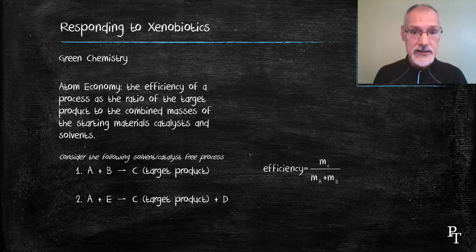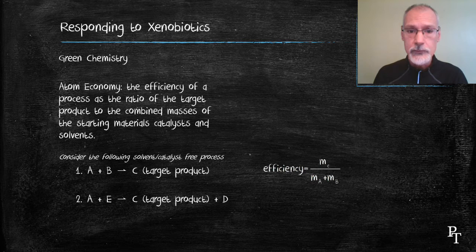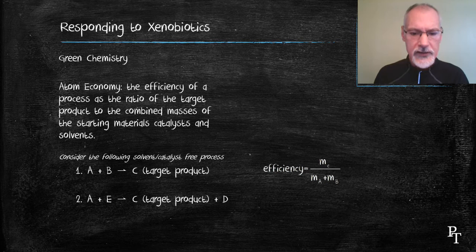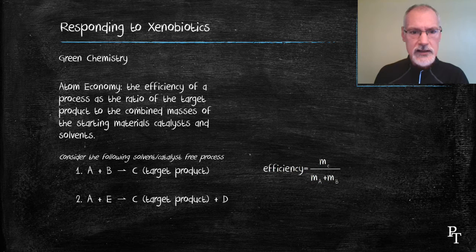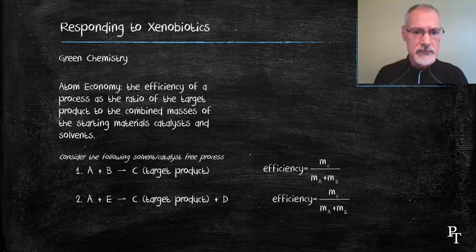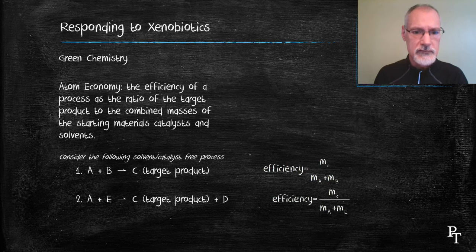Now if I use the exact stoichiometric amounts of my reactants, this process would almost be 100% efficient. In my second process, I'm reacting A with substance E to make substance C my target and a byproduct D. That byproduct D reduces the efficiency of my process, and it wouldn't be considered as green a process. So A would be a superior choice to develop.